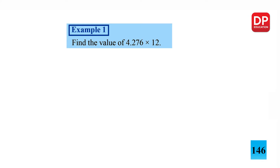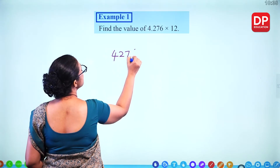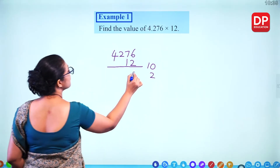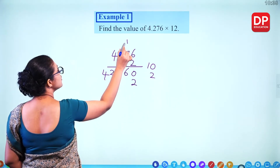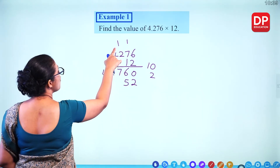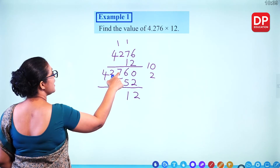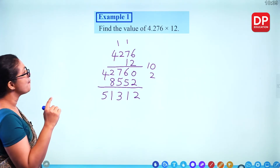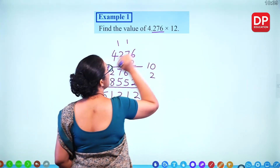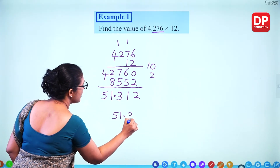Example: multiply a decimal by a whole number. For 4.276 times 12: ignore the decimal, 4276 multiplied by 12. Split into 10 and 2. Multiply by 2: 2 times 6 is 12, 2 times 7 is 14 plus 1 is 15, 2 times 2 plus 1 is 5, 2 times 4 is 8. Add results together. With 3 decimal places, the answer is 51.312.